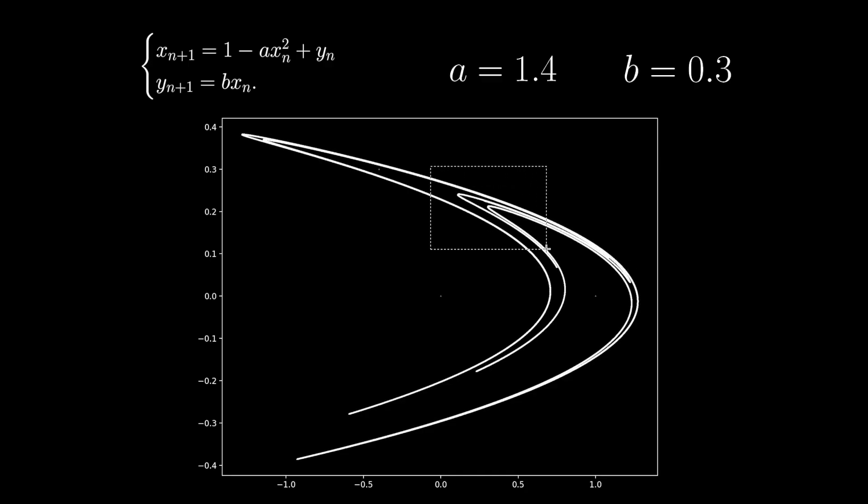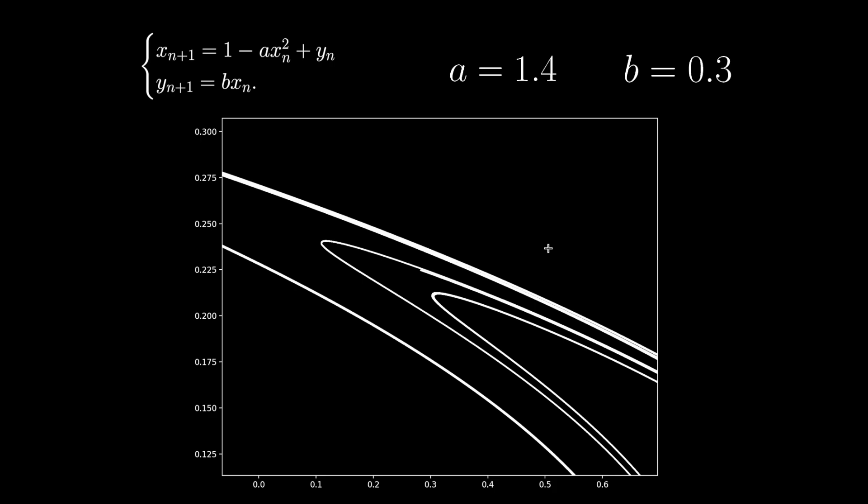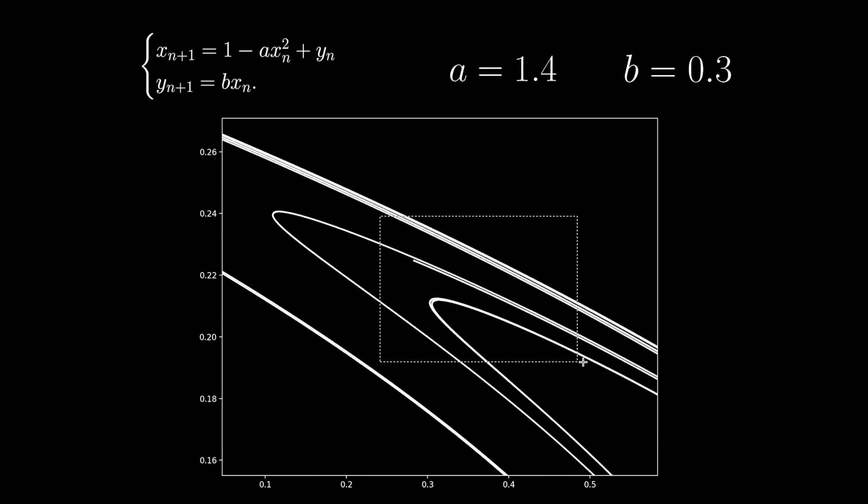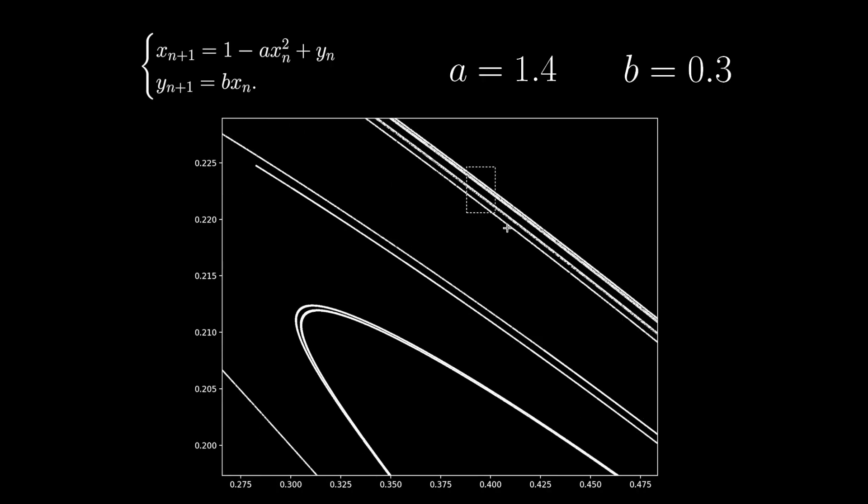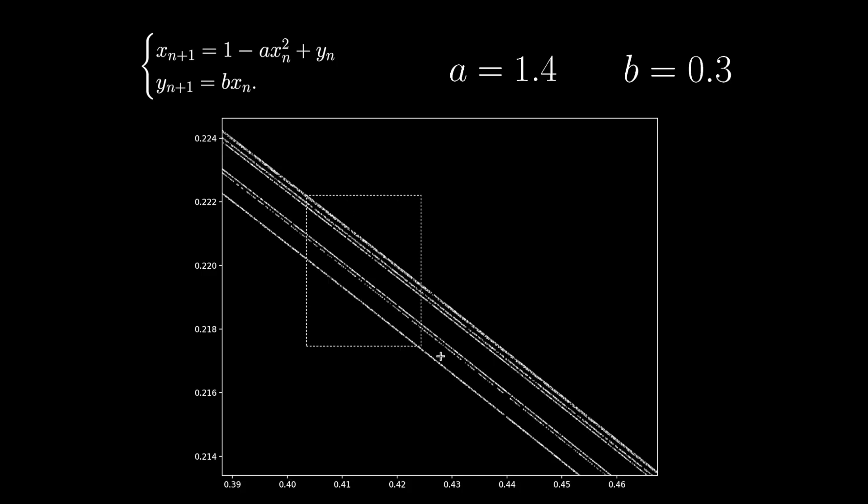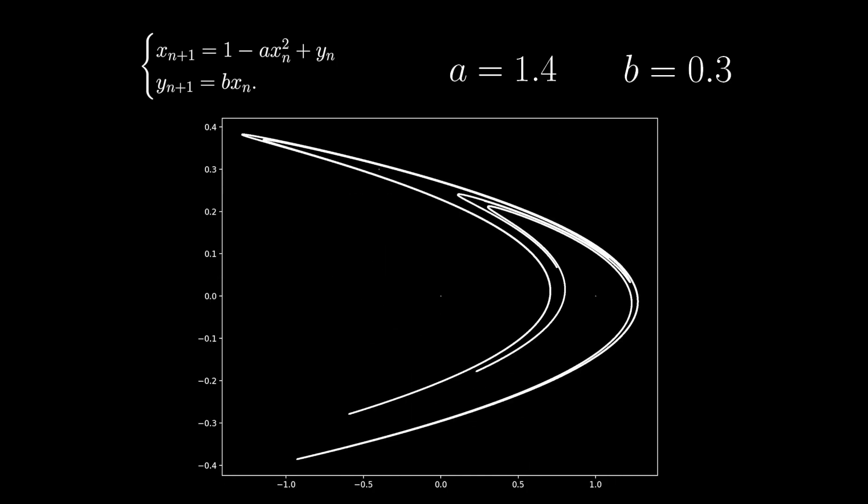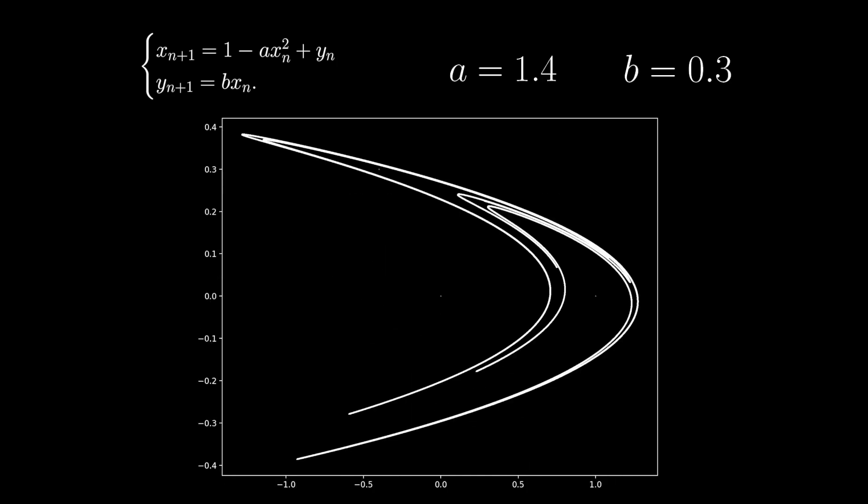If we zoom in here with these folds, we can see some of the finer detail of the set. As we continue to zoom in, what looked like a single fold is actually a series of folded layers. In fact, the Hénon map's strange attractor is a fractal, smooth in one direction but disjoint and self-similar in another.